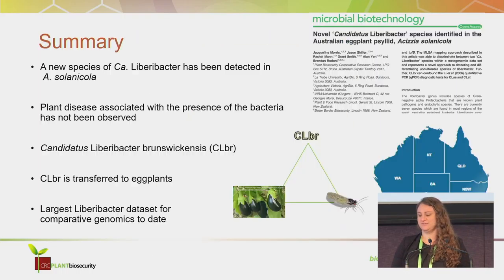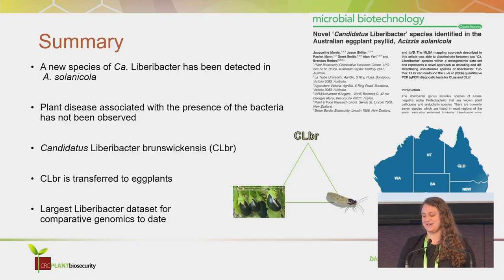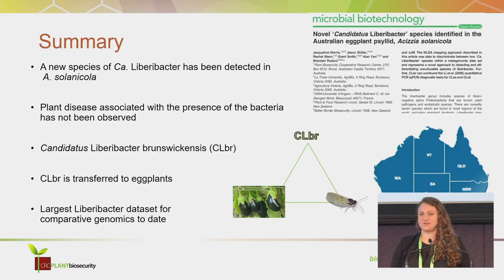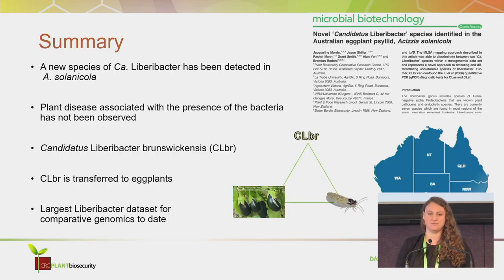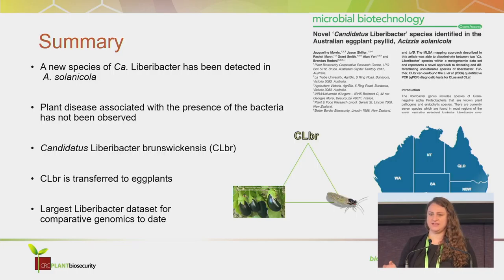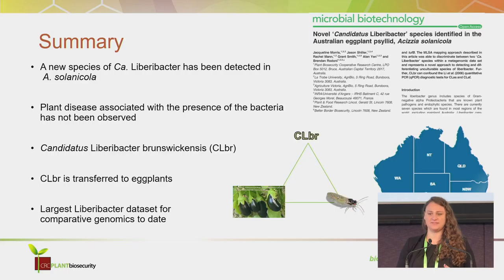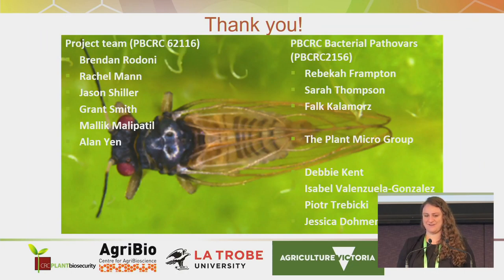In summary, I've found a novel species of Liberibacter detected in the eggplant psyllid, which I've named Candidatus Liberibacter brunswickensis based on its collection location. No plant disease associated with the bacteria has been observed. Brunswickensis is transferred to eggplants and this work contributes to the largest Liberibacter dataset for comparative genomics. Importantly, I've been able to send sequence information and DNA extracts to other labs to help validate their diagnostic protocols. Thank you very much.